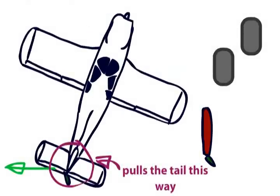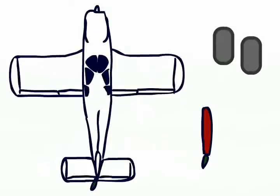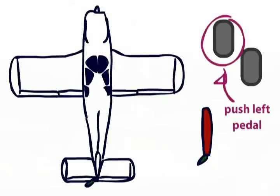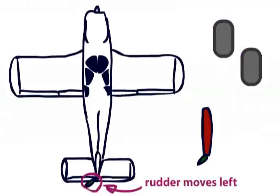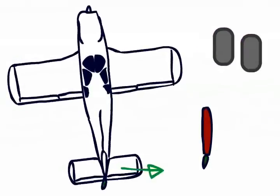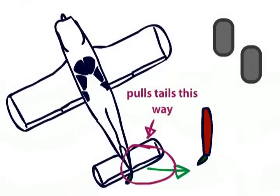If you push the left rudder pedal, the rudder will move left. Lift then pulls the tail over this way, and the movement of the tail causes the aircraft to yaw in the desired direction.